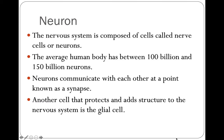The basic instrument in the nervous system is the neuron. It's composed of billions and billions of cells. The average human has between 100 billion and 150 billion neurons. Most of these are in the brain. Neurons communicate with each other at a point known as the synapse. Another cell that protects and adds structure to the nervous system is the glial cell. We have at least as many glial cells as neurons — probably more glial cells than neurons.